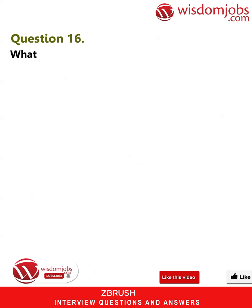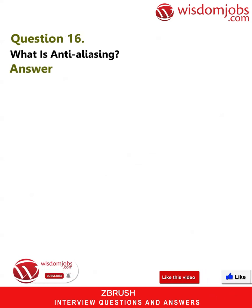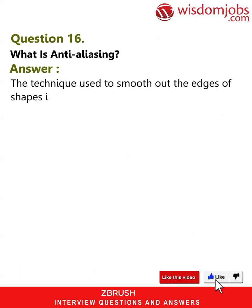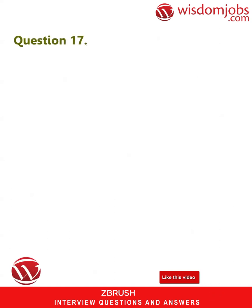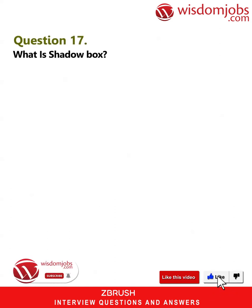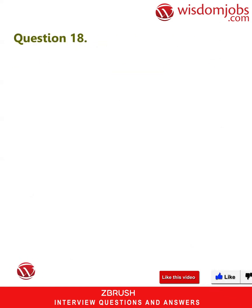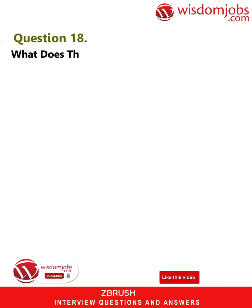Question 16: What is anti-aliasing? Answer: The technique used to smooth out the edges of shapes is called anti-aliasing. Question 17: What is shadow box? Answer: Shadow box is used to scale models to reference images.